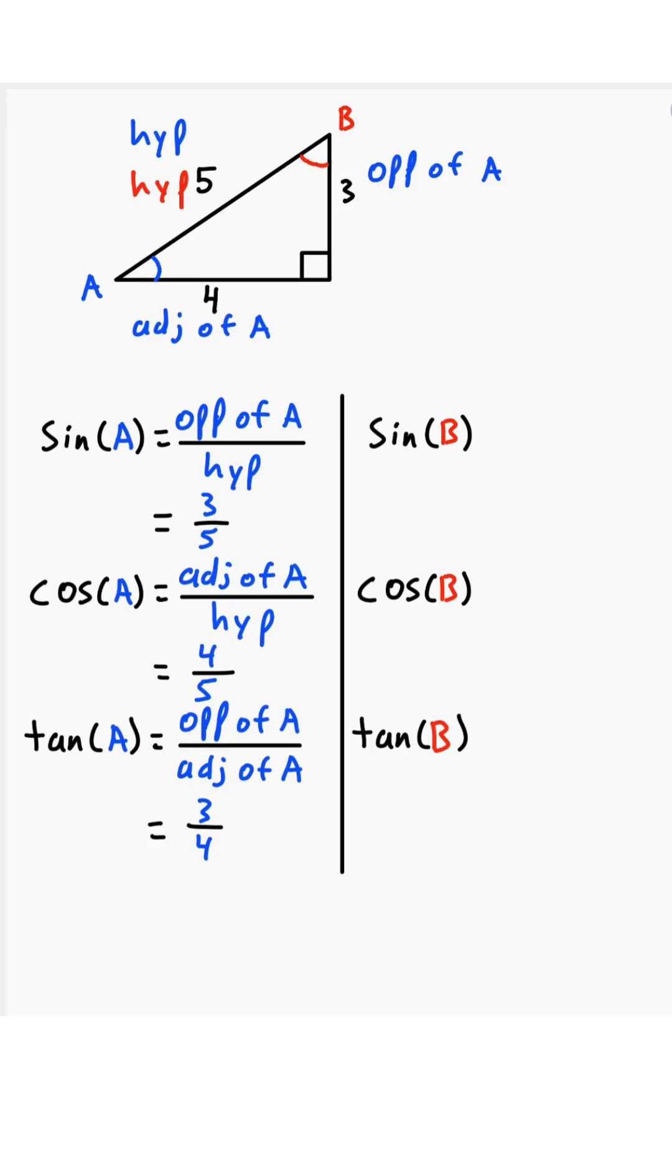From point b, the hypotenuse is still the hypotenuse. The opposite of b is now the 4, and the adjacent of b is now the 3.